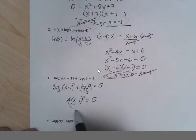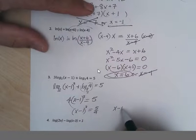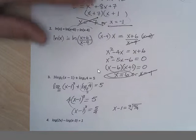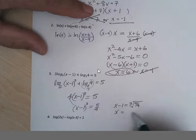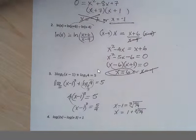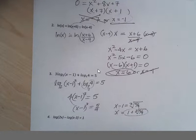When it's multiplied, this would be 4 times x minus 1 to the third equals 5. Divide by 4, and x minus 1 to the third equals 5 fourths. Take the cube root and you get x minus 1 equals the cube root of 5 fourths or 1.25. Add 1 and you get x equals 1 plus cube root of 5 fourths.